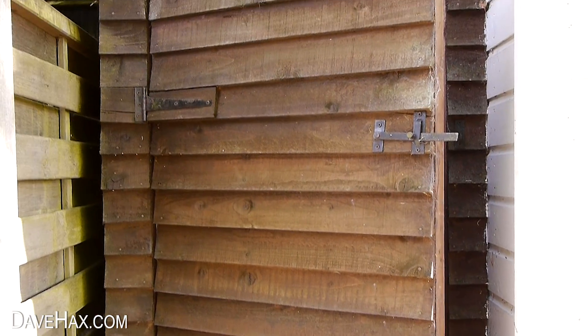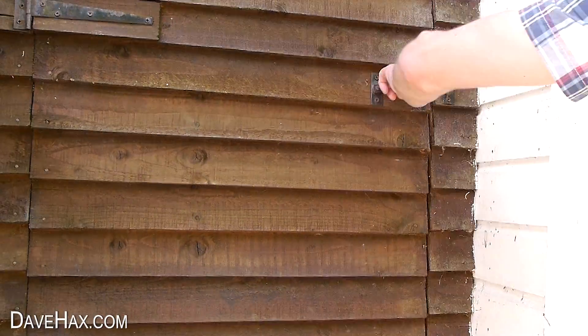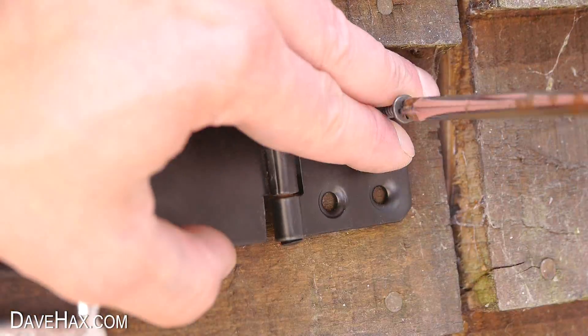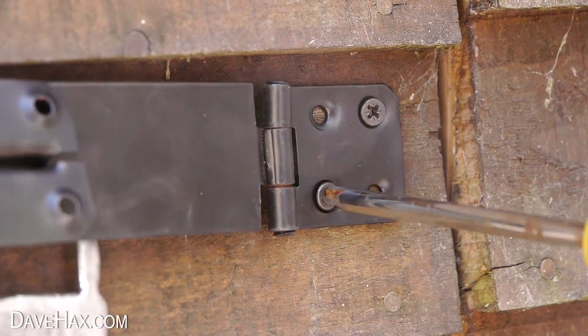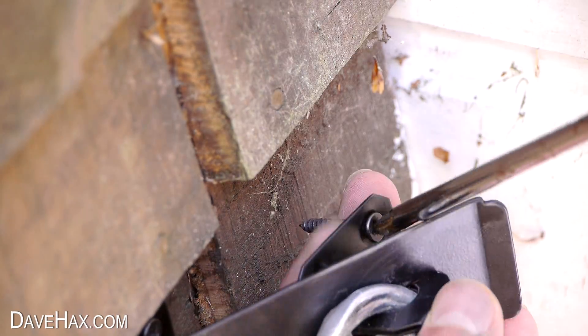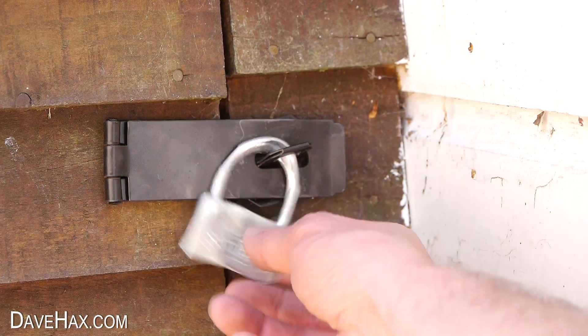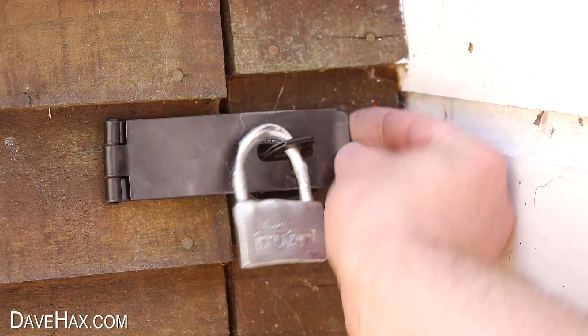I thought it could be fun to fix it to this shed door and have a padlock that can't be opened with a key. So I wound in a couple of screws, and I was able to sneak in a couple on the other side too. The shed looks nice and secure, but there's no key for the lock.